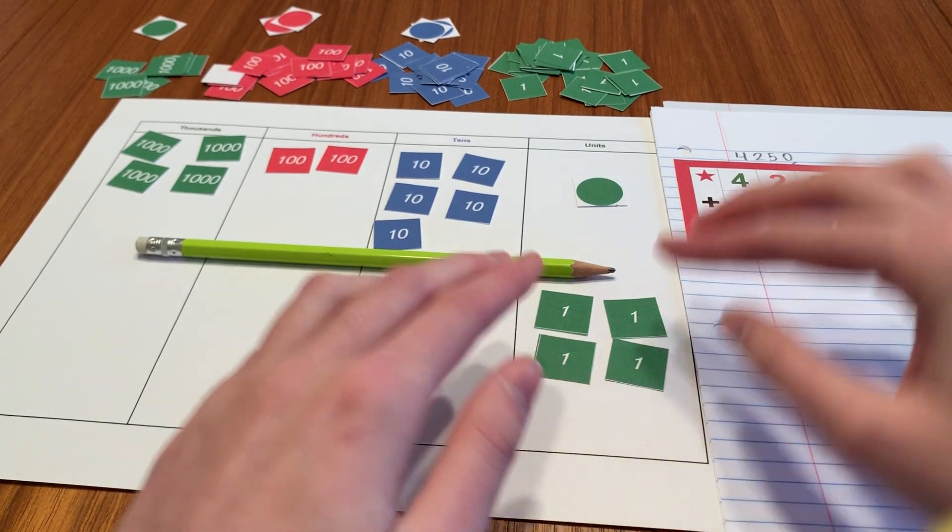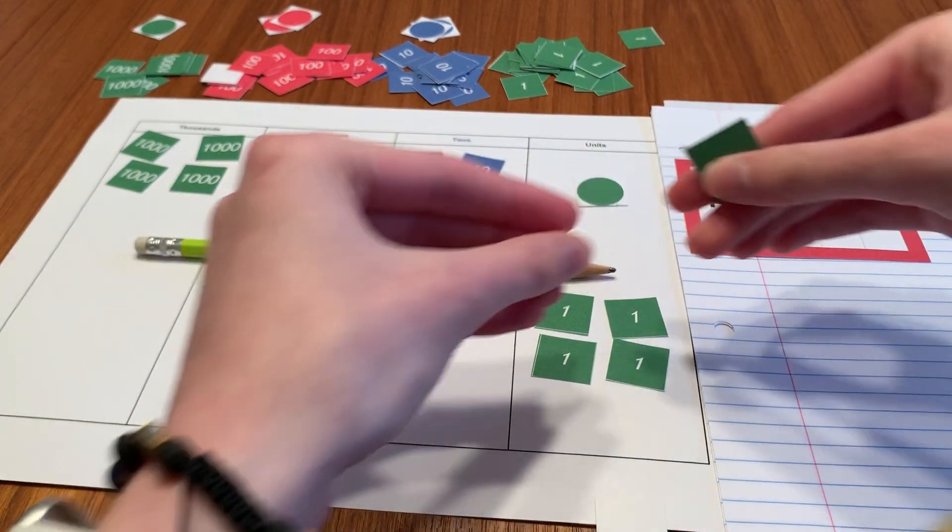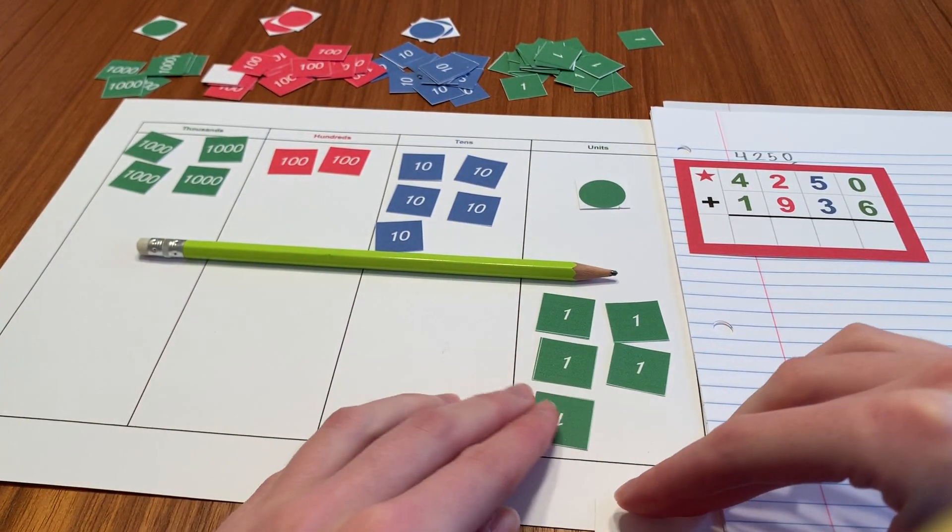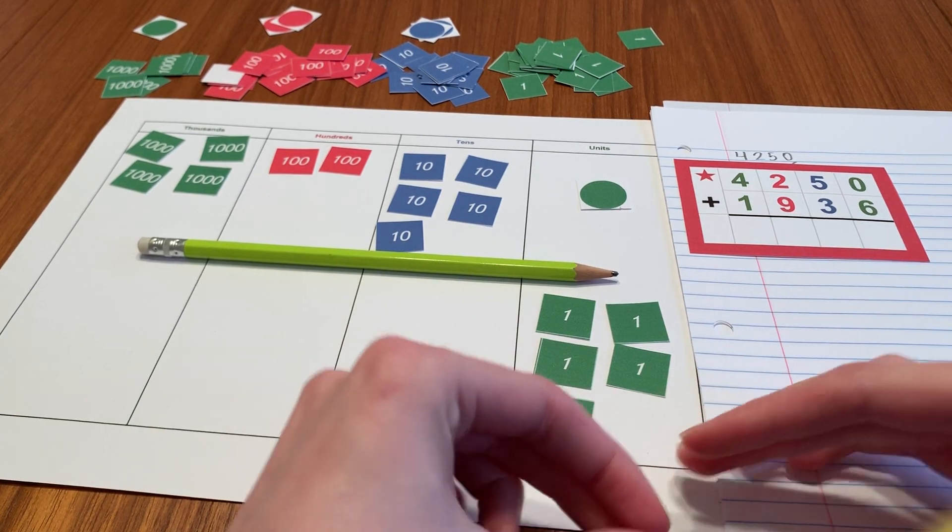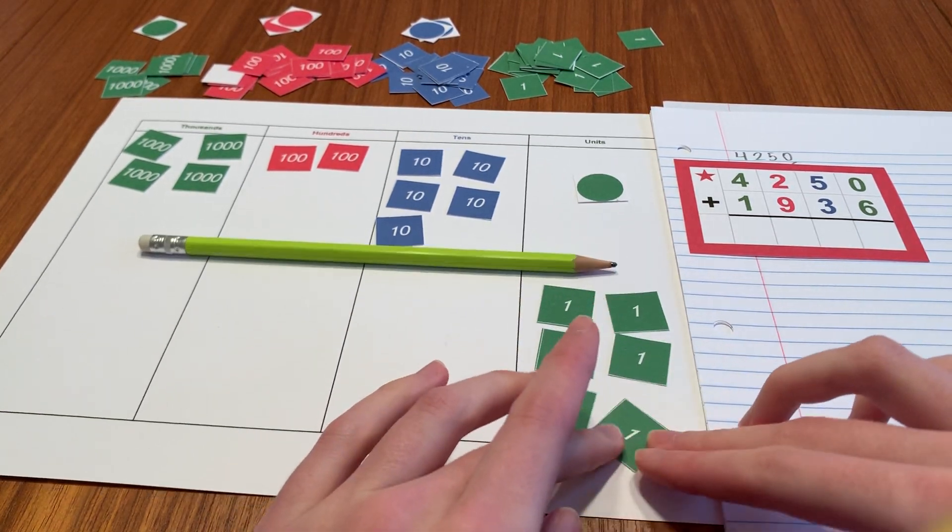One, two, three, four, five, six. These little paper ones are kind of tricky sometimes.